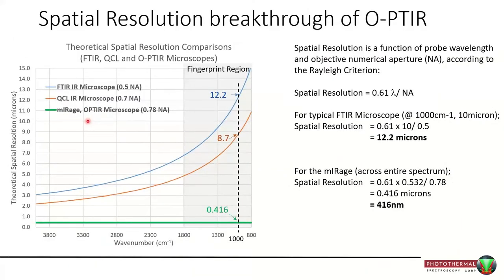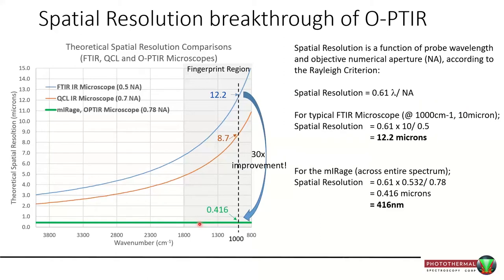Spatial resolution is another key differentiator of OPTIR. Using the Rayleigh criterion, resolution is highly wavelength dependent. With a regular numerical aperture on an FTIR objective, spatial resolution can be up in the low teens of microns in the fingerprint region, improving to maybe three microns in the high wavenumber range. With OPTIR, because the probe wavelength is fixed, so too is the spatial resolution. With a short-wavelength laser and high numerical aperture objective, the theoretical resolution is just over 400 nanometers — fixed along the entire wavelength range, representing roughly a 30x improvement over regular IR in the fingerprint region.